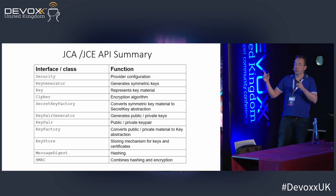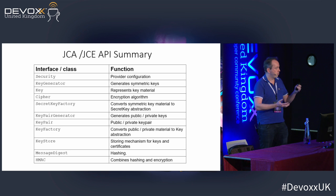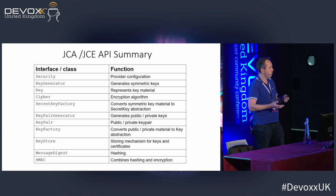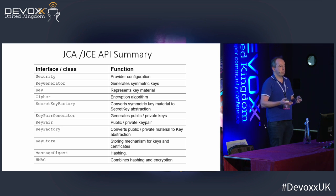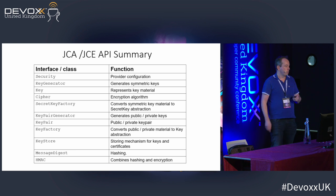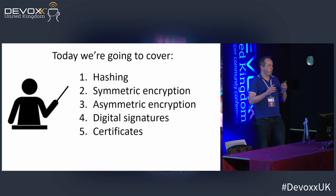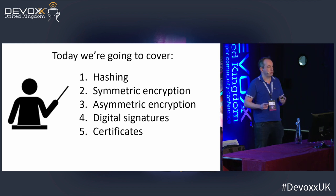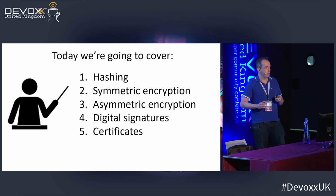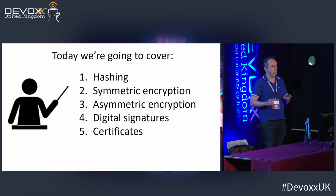Here's a list of the key classes we're going to see today — about 10 or 12 classes — to give you an impression of how the API is structured. Most of what you want to do with cryptography in Java uses these classes. What we're going to cover today: hashing, symmetric encryption, asymmetric encryption, digital signatures — which are really important — and also a little bit about certificates and certificate management.